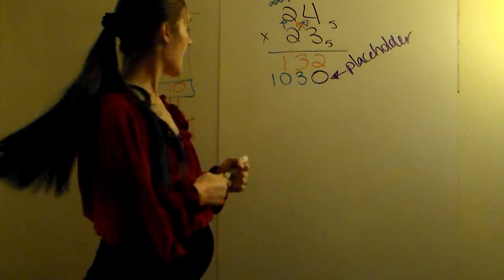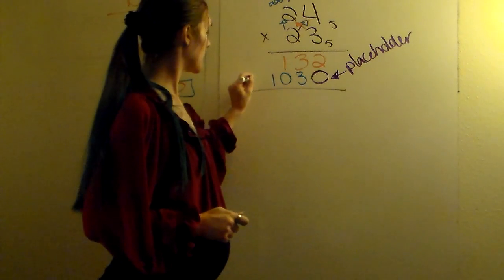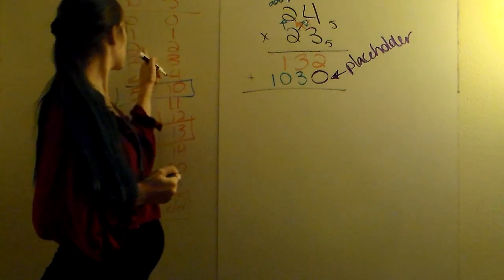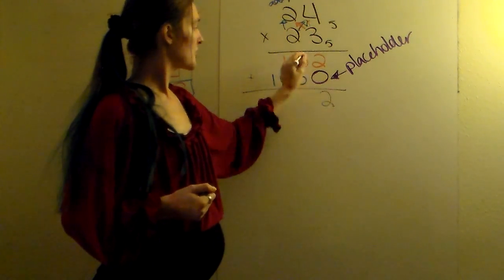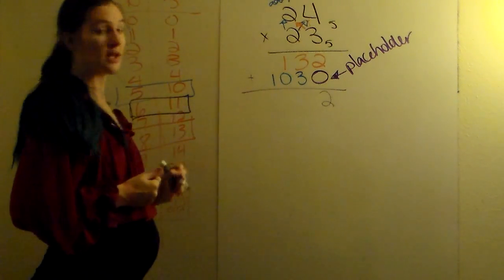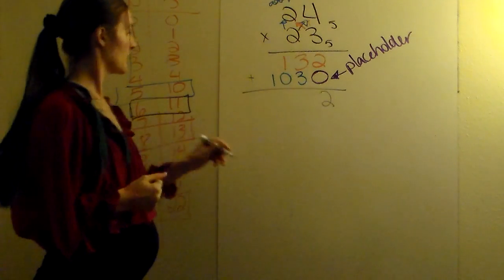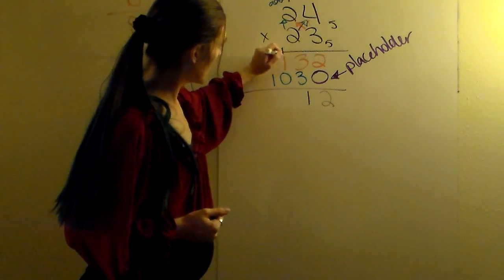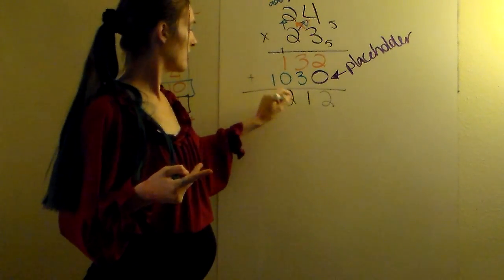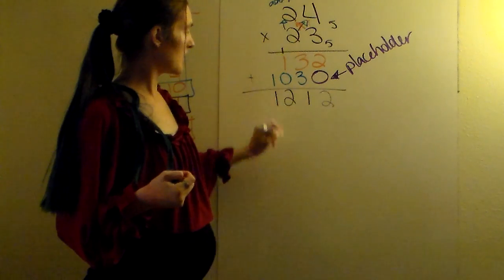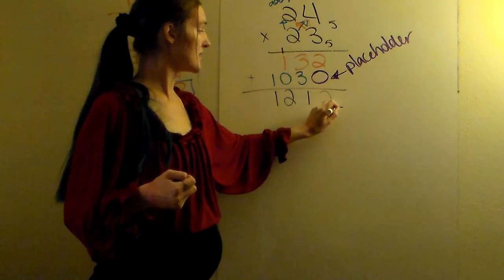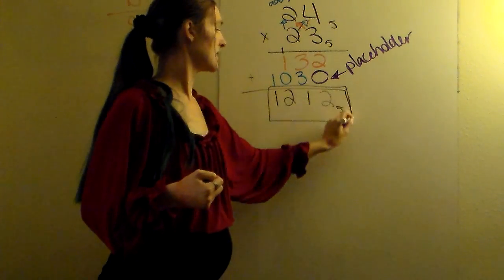And then your last step is to add, just like we did in base 10. So we're going to add vertically. 2 plus 0 is 2. Are we allowed a 2? Yes. 3 plus 3 is 6. We're not allowed a 6. Instead, we're going to do 11. So we're back to base addition. Put your 1, carry your 1. 0 plus 1 plus 1 is 2. We're allowed a 2. And 1 plus nothing is 1. We're allowed a 1. The last thing that we're missing is our actual base. Don't forget to put your base at the end.